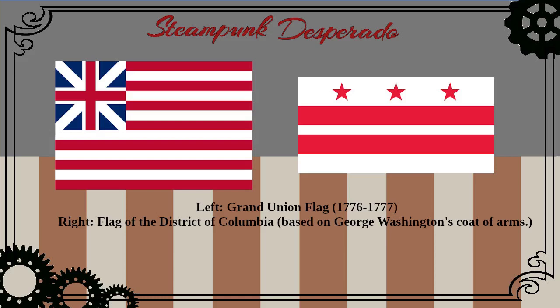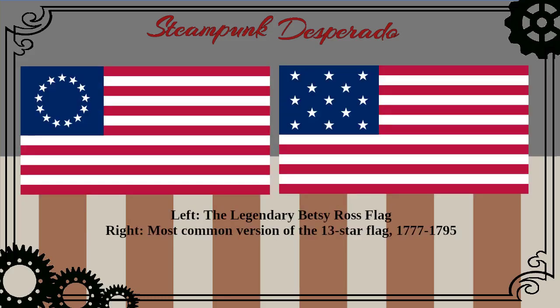Some people say another influence was the arms of George Washington, which has stars and stripes on it — it's currently the flag of the District of Columbia. Others say that's another coincidence. Here's the Betsy Ross flag — very famous, very beloved. And here is the rectangular version, which was probably, according to historians, the more commonly used one.